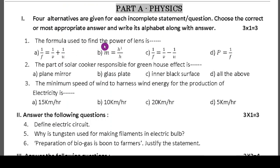The formula used to find the power of the lens - they are going to use P equals 1 by F. So option D is the right answer. Second question: the part of the solar cooker responsible for greenhouse effect - that is inner black surface. The answer is C. Third question: the minimum speed of wind to harness wind energy for the production of electricity is 15 km per hour, 10 km per hour, 20 km per hour, or 5 km per hour.